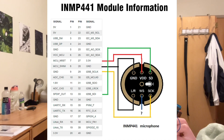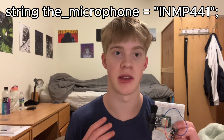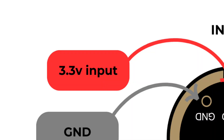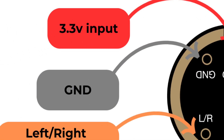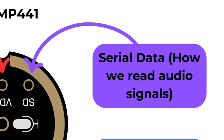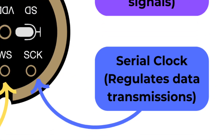First thing we're going to go over is the pins — what each pin on this microphone does and how they're useful. I'm going to be referring to the INMP441 as 'the microphone.' The microphone is powered off of 3.3 volts, which goes directly into the VCC, and it takes a ground connected to your microcontroller. To receive data from the microphone, we have the SD pin, which is the serial data pin, and then we have the serial clock pin, which synchronizes the data with the microcontroller so it can read it efficiently.